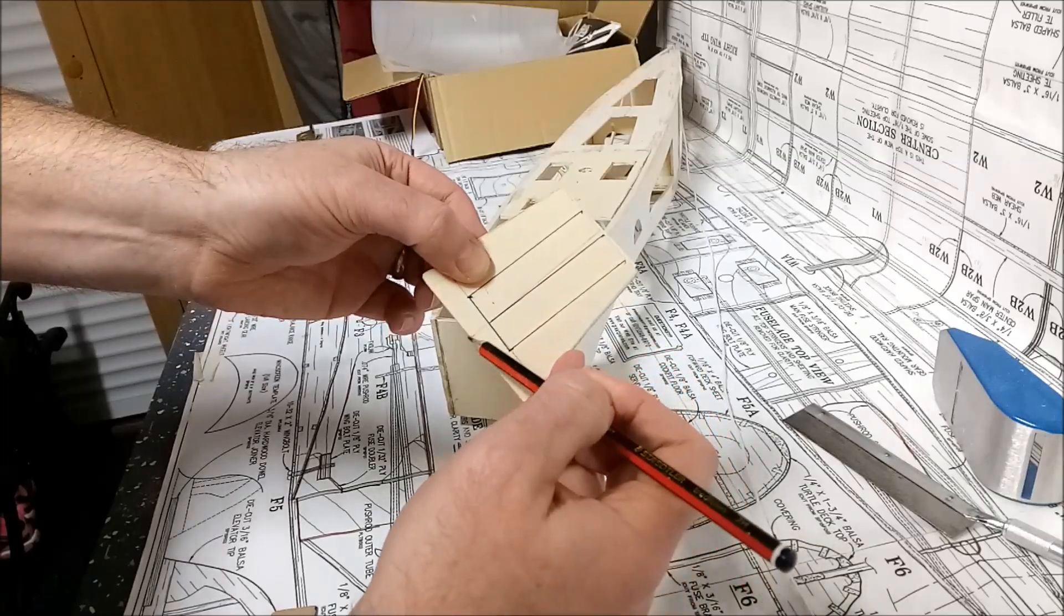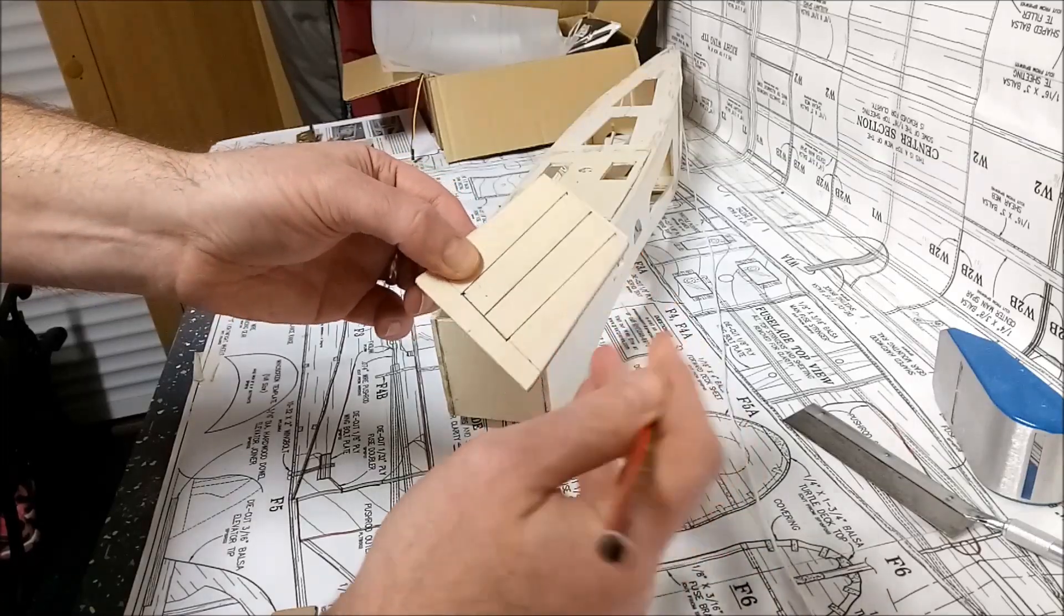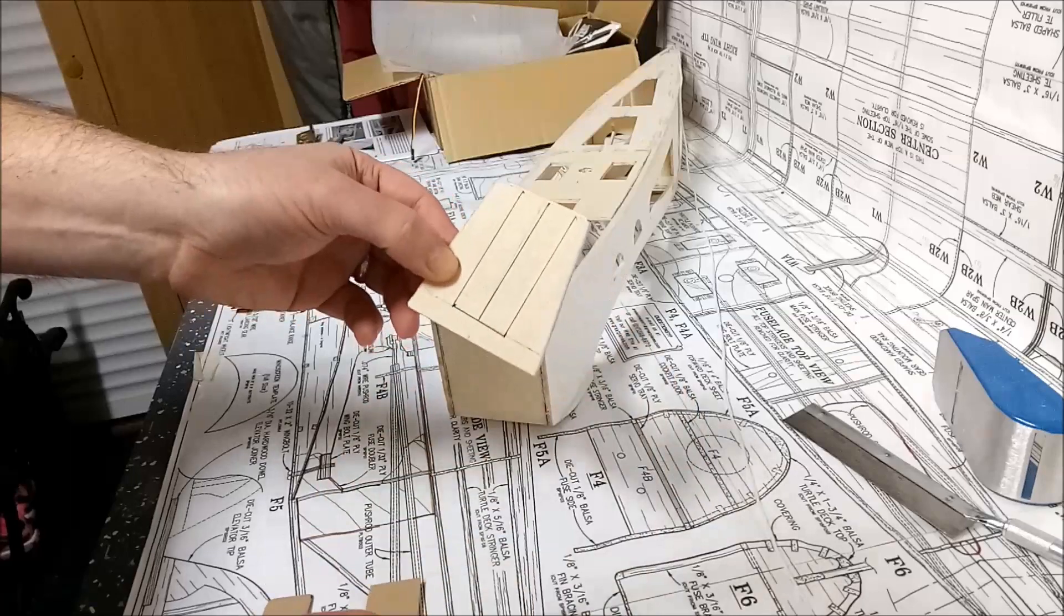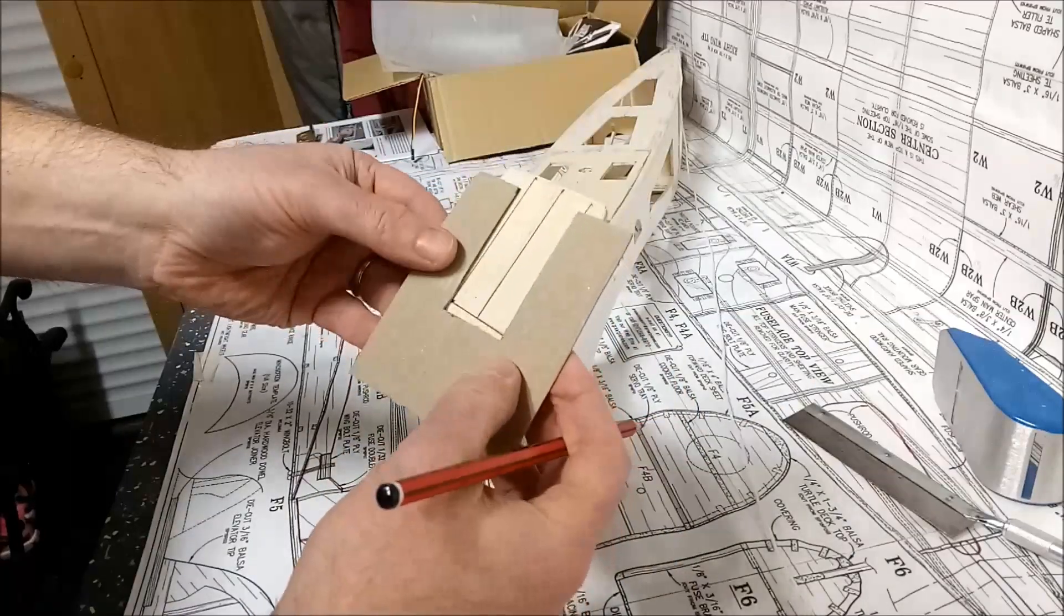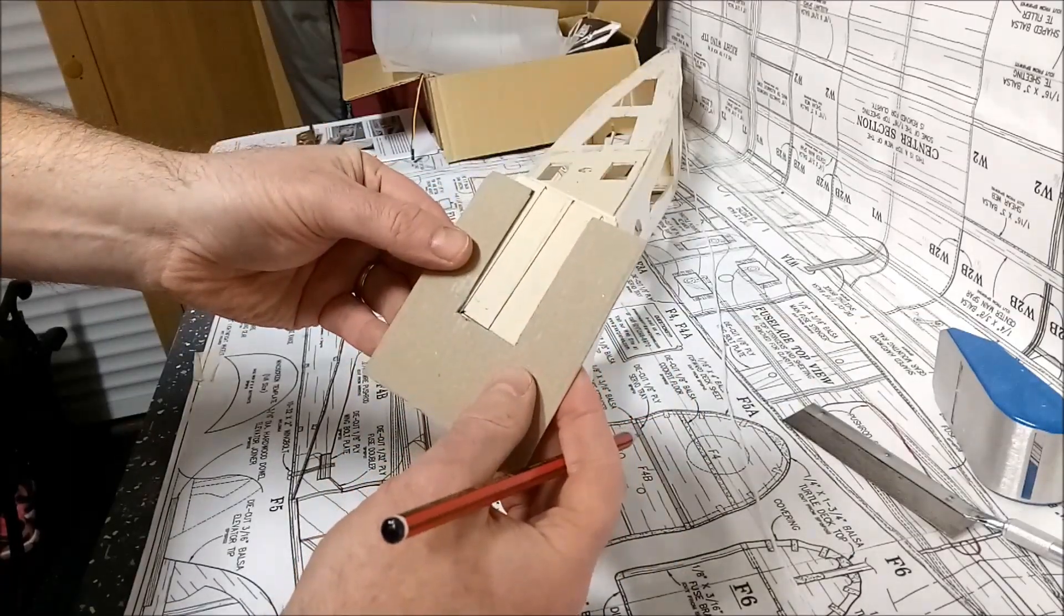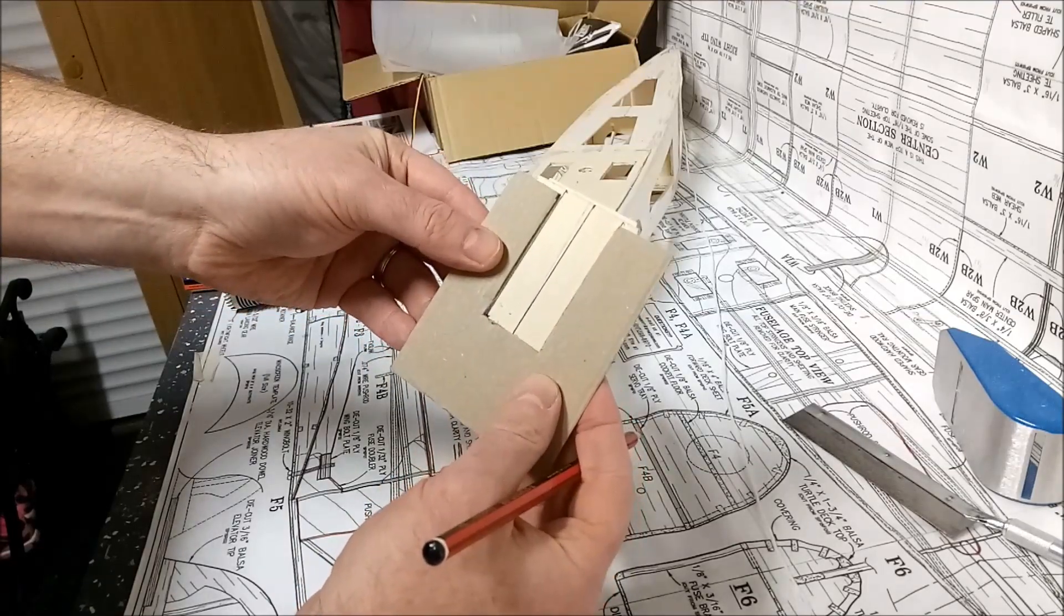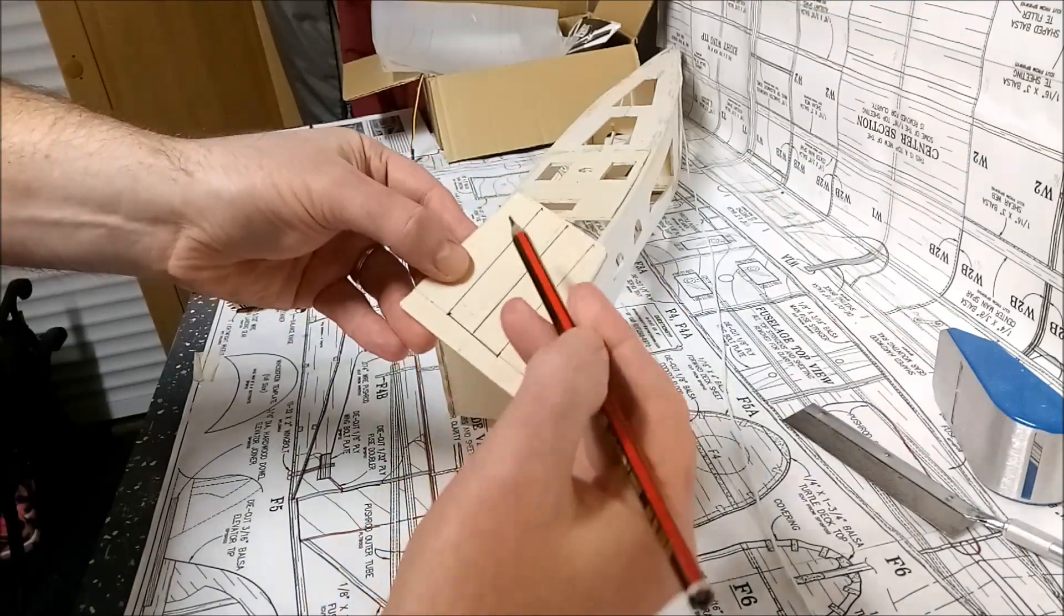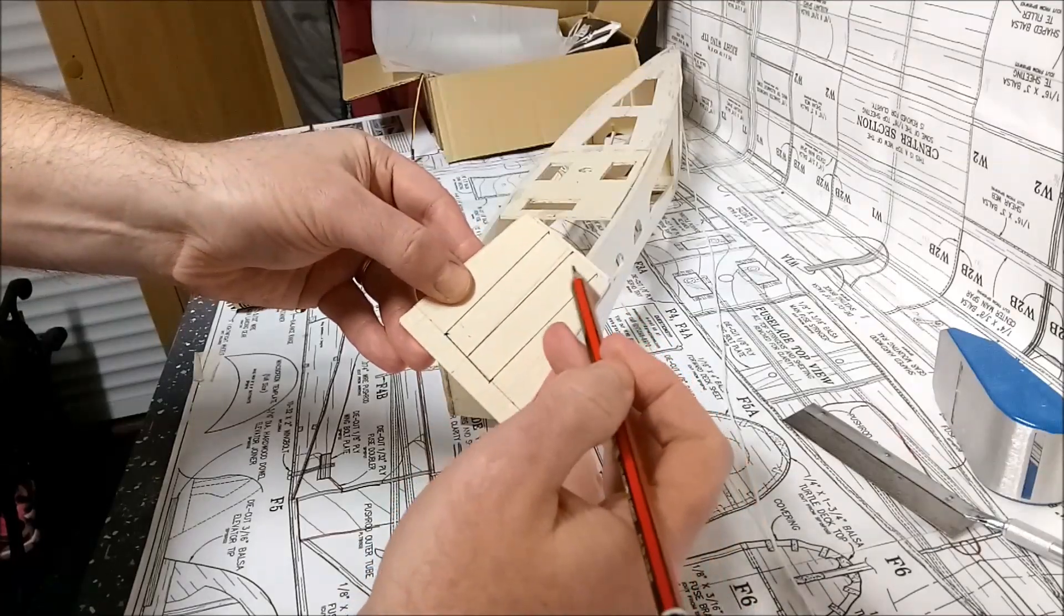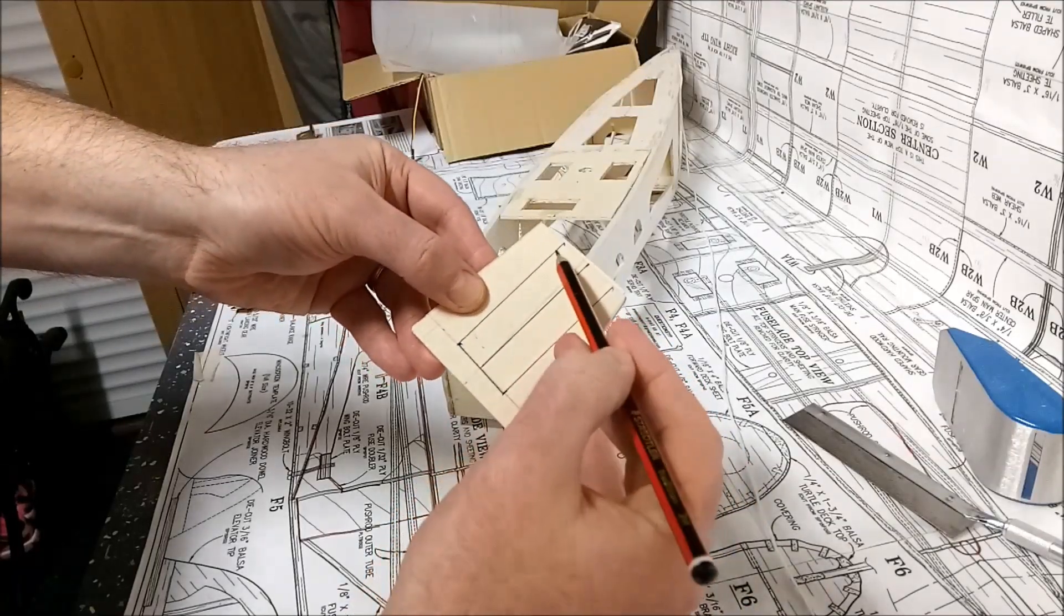Which follows the center line of the airplane itself, and then I have used my template on that engine mount, and then offset it by 2 degrees, and then marked out the area that I need to remove in order to make the engine mount itself.